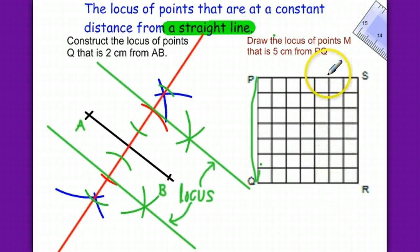And this time, we only need one parallel line because the other one is somewhere here, which is outside of the boundary, outside the given diagram. So we don't need that one.